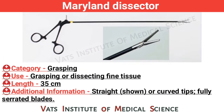Maryland dissector. Category: grasping. Use: grasping or dissecting fine tissue. Length: 35 cm. Additional information: straight or curved tip, fully serrated blades.